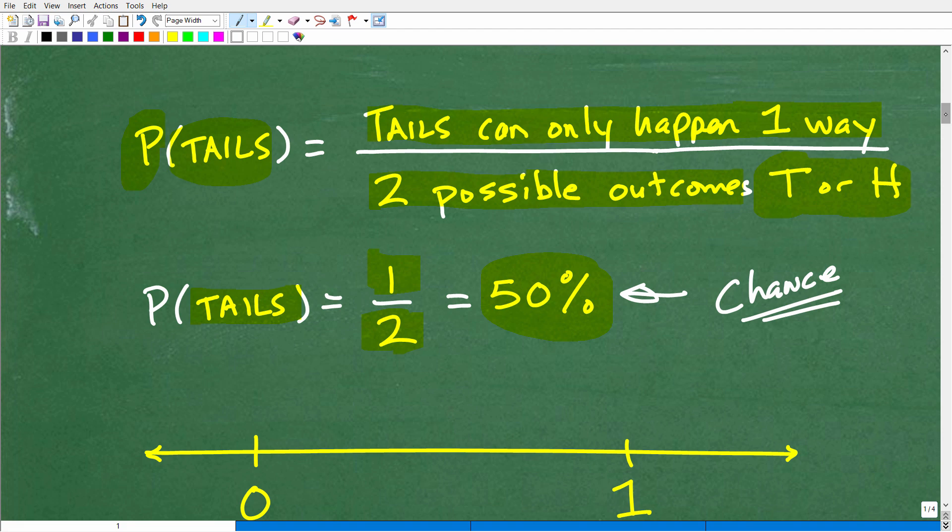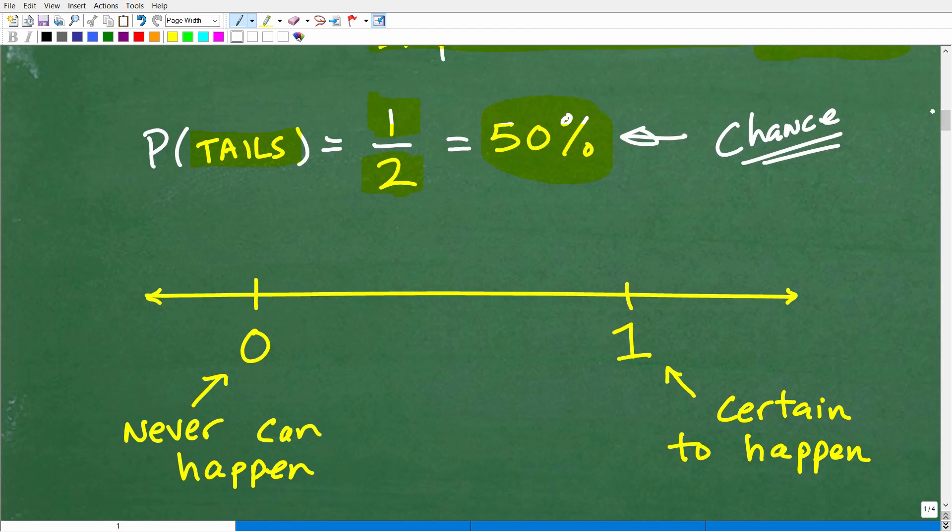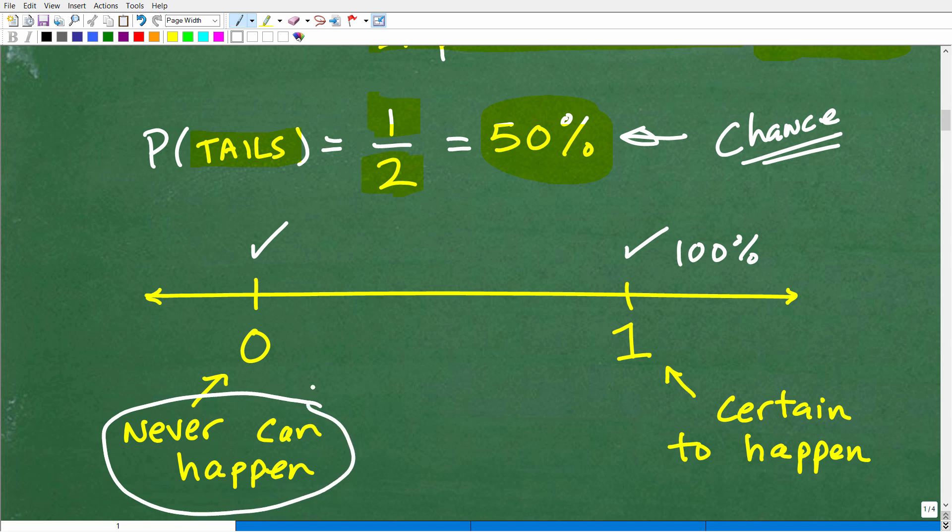All right. So, now let's go ahead and kind of build upon this and talk about probability. Well, probability, technically, is a number that spans from 0 to 1. And you can think of it as 0 to 100%. So, if you have a probability of 0, that means that something can never happen. So, what would that be? Let's take a look at an example of that, maybe.